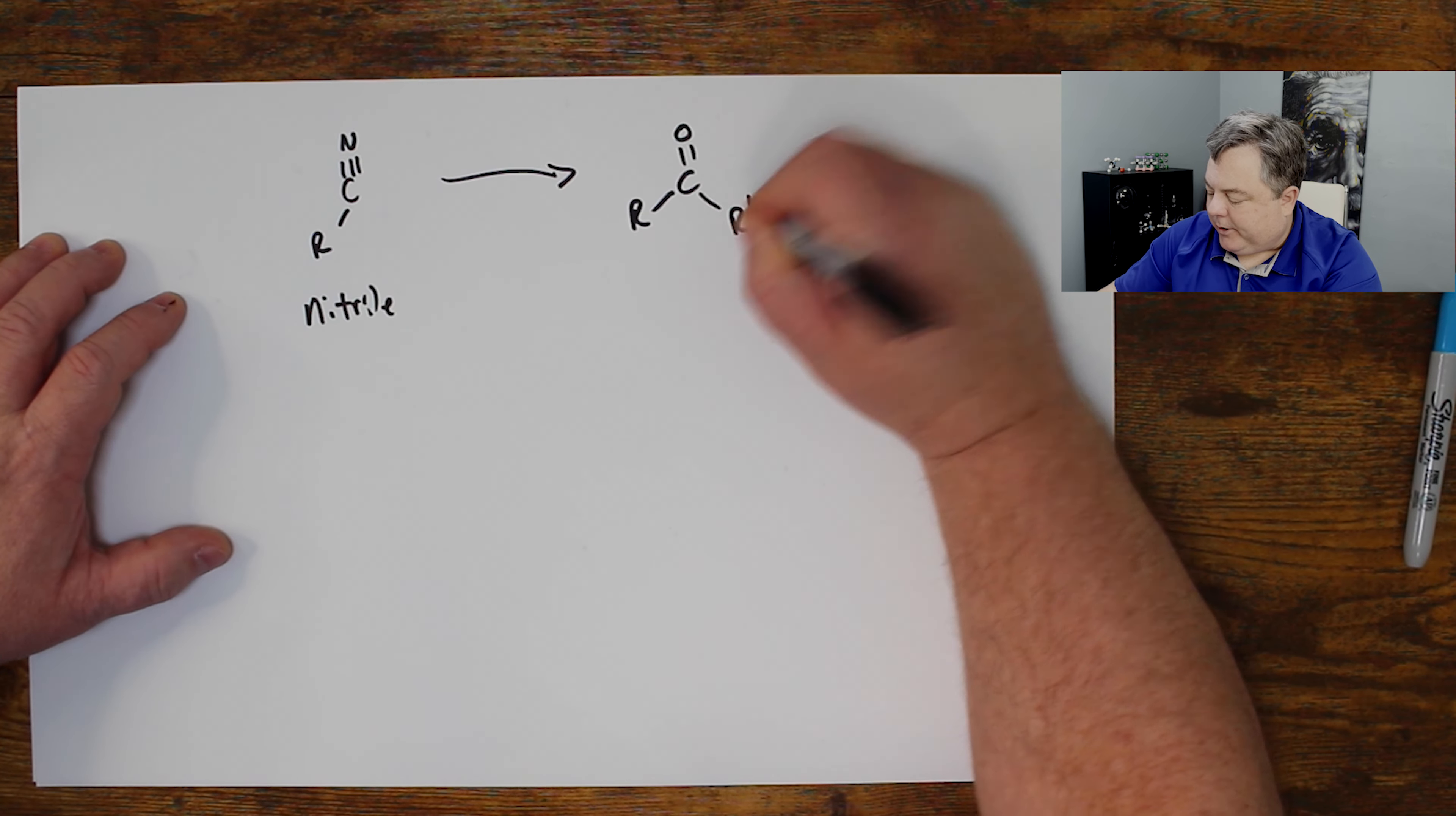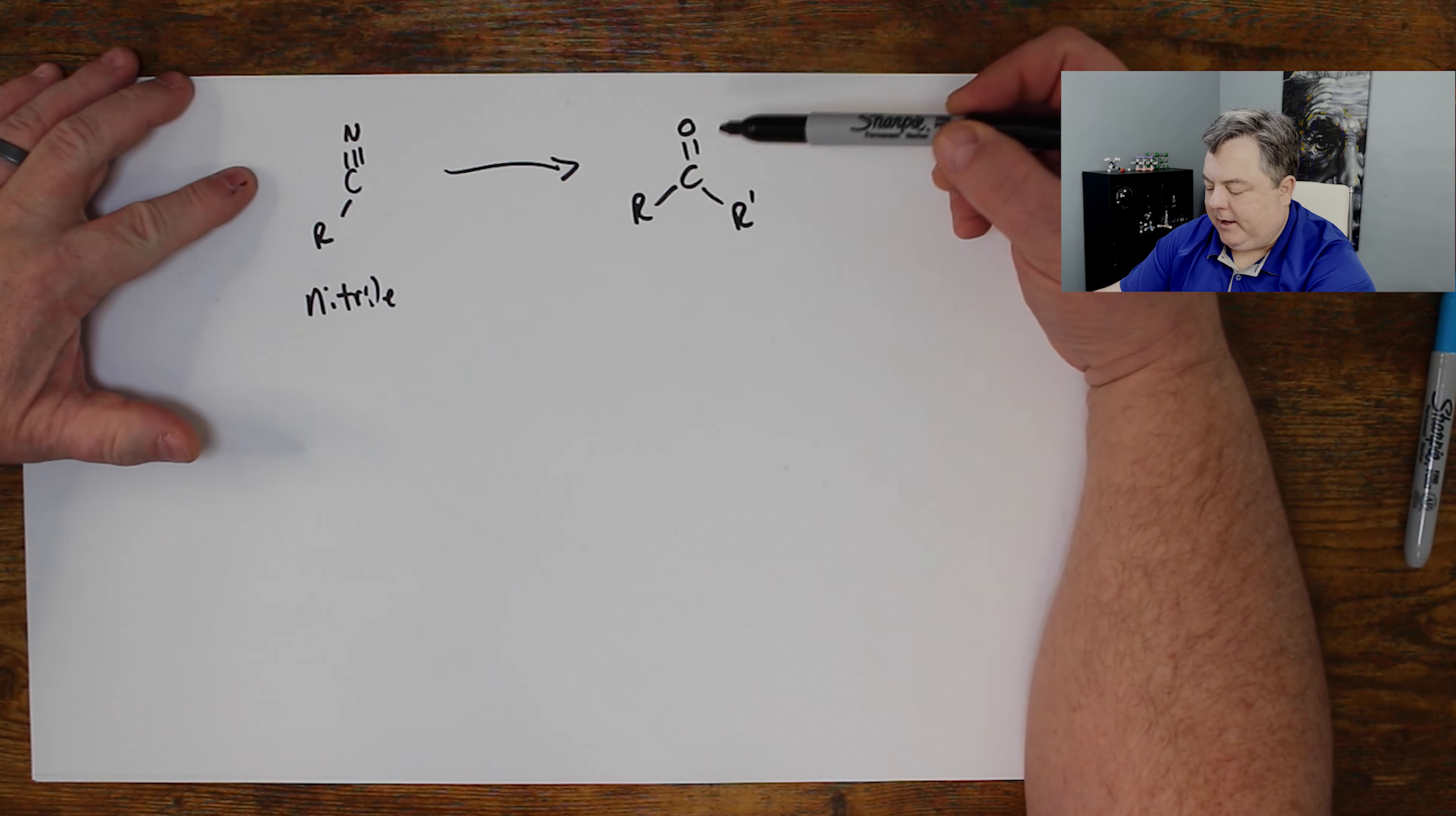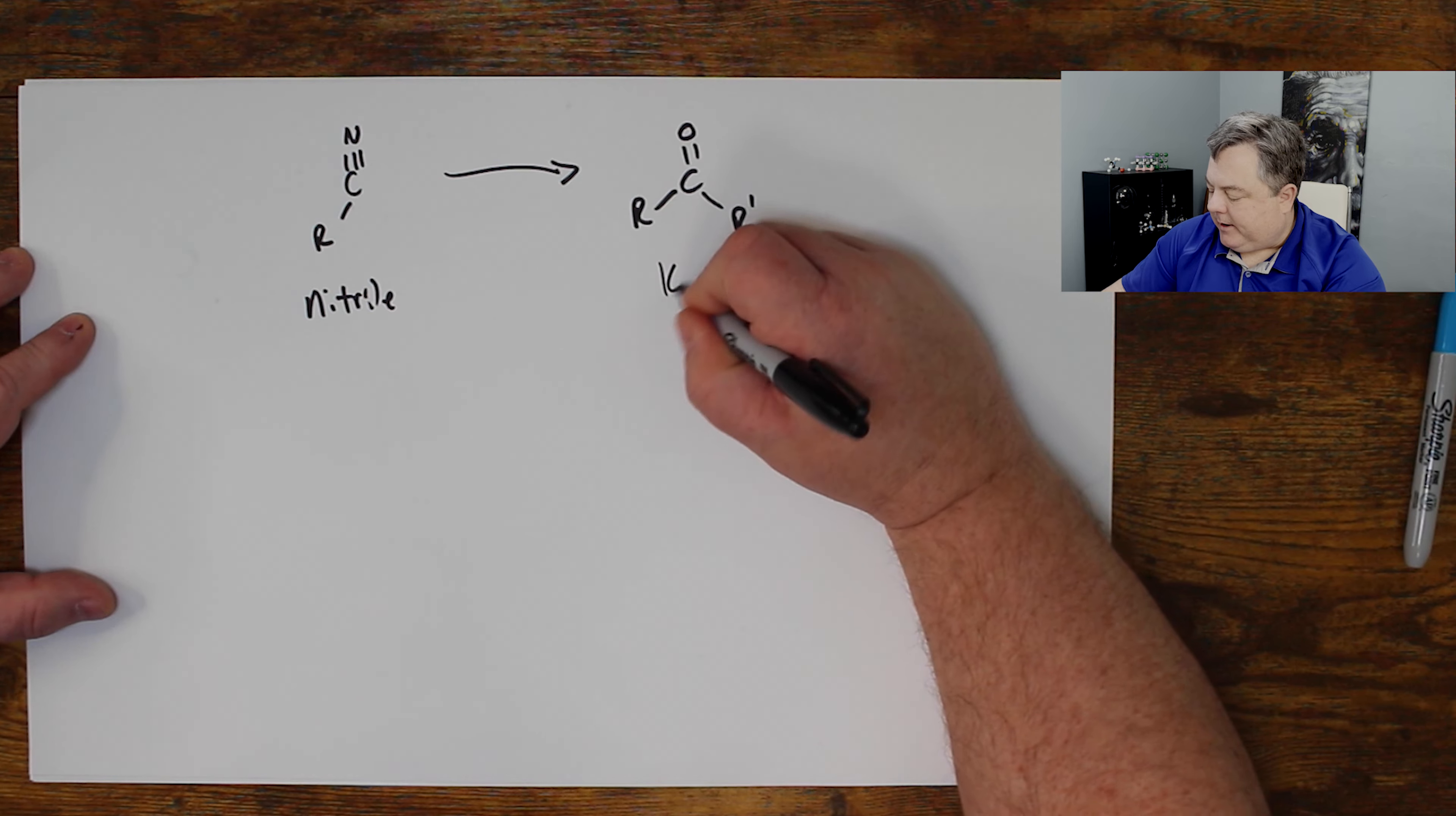So I need another carbon group on the other side. I want you to see this nitrile as a hidden carbonyl. This will turn into this. But I need another R group to come in and attack.